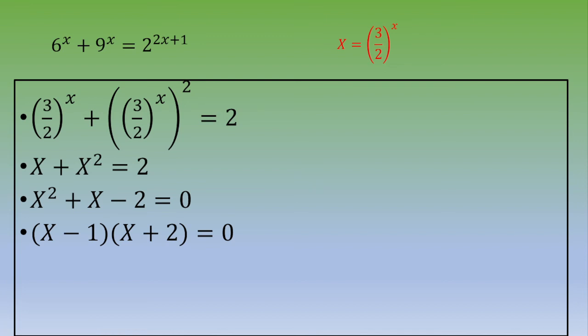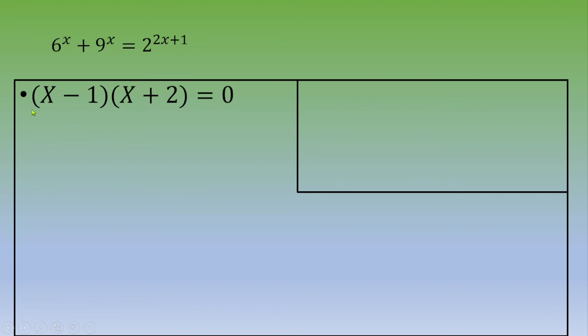This is interesting because you've got two factors equal to 0. First case: if capital X minus 1 equals 0, we set capital X equals 3 over 2 power x.